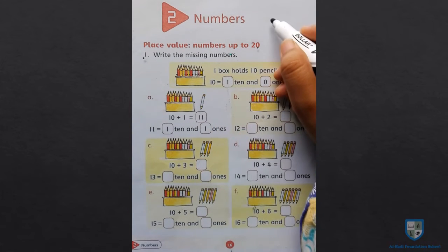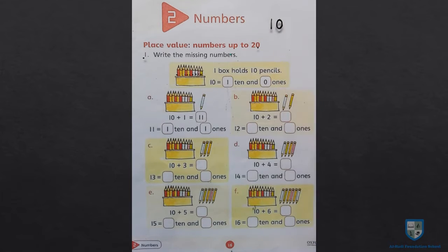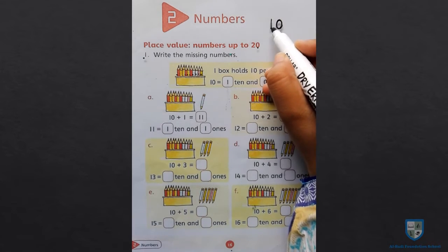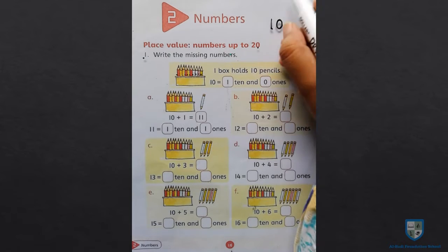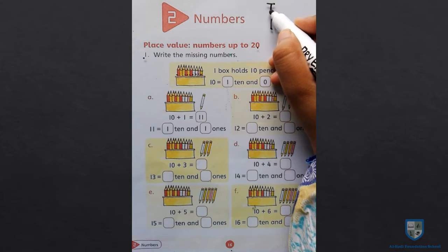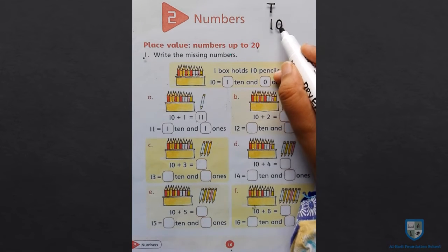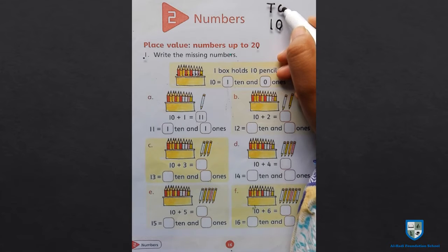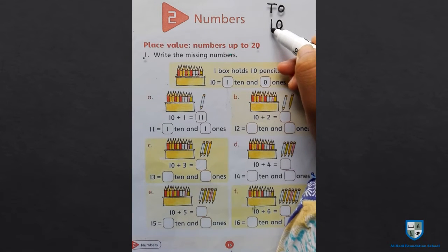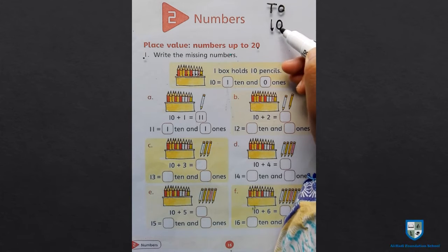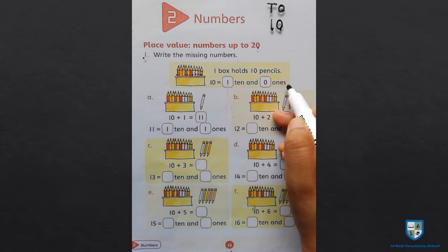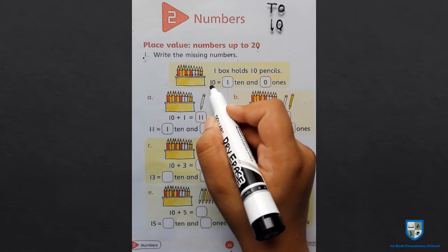First of all we will learn about 10s and 1s. In the first number, the number is left side, we call 10s. And the second number is right side, we call 1s. So 10s and 0 1s is equal to 10.